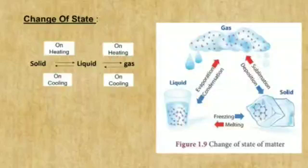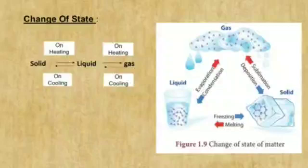Now let's know about the change of state. Observe the picture below. We have already learned that change in physical state of a substance is an effect of the amount of heat in it. On gaining heat, the substance changes from solid to liquid and from liquid to gas. On the other hand, when a substance cools or loses its heat, it changes from gaseous to liquid and liquid to solid state.